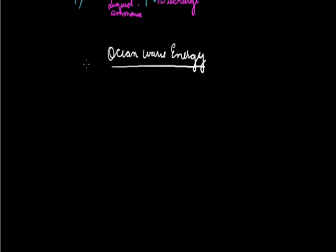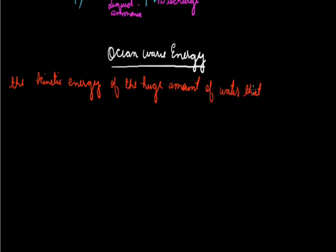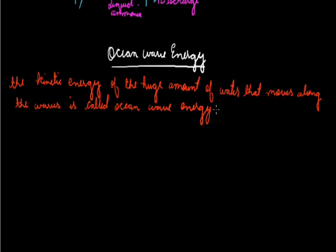Here we will discuss an oscillating water column wave power generator. The kinetic energy of the moving water which is moving along the waves is known as the ocean wave energy, which is used to generate electricity. The figure below will depict an oscillating water column wave power generator.